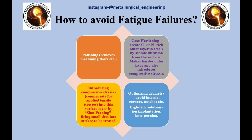How to prevent fatigue failures. There are four approaches: 1) Polishing — removes machining flaws etc.; 2) Case hardening — creating a carbon or nitrogen rich outer layer in steels by atomic diffusion from the surface, making a harder outer layer and also introducing compressive stress; 3) Introducing compressive stresses to compensate for applied tensile stresses into a thin surface layer by shot peening, which involves firing small shot into the surface to be treated; 4) Optimizing geometry — avoiding internal corners, notches etc. — and high-tech solutions such as ion implantation and laser peening.